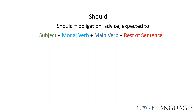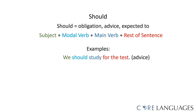Here are examples of sentences that use the modal verb Should. Should is used to express an obligation, to give advice, or to express when you are expected to do something. The word order is the same. For example, 'We should study for the test.' 'You should exercise regularly.' Both sentences are a form of advice.